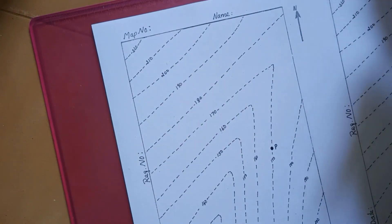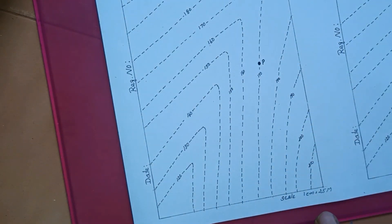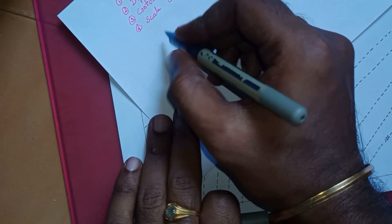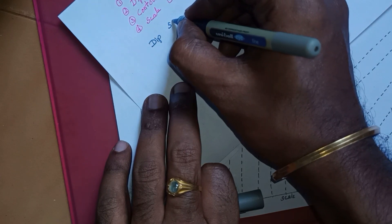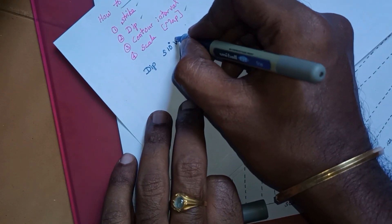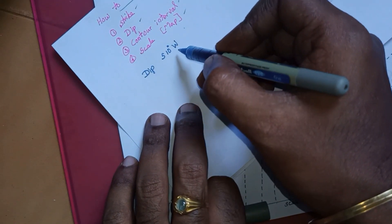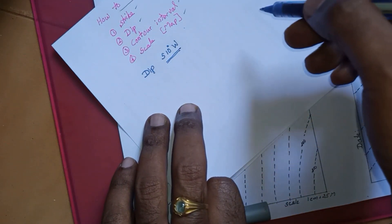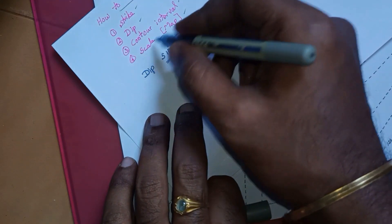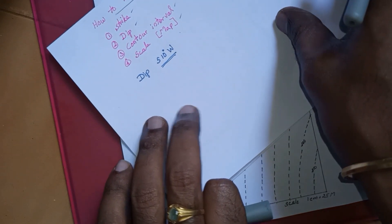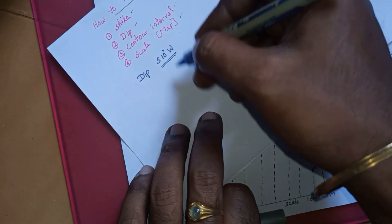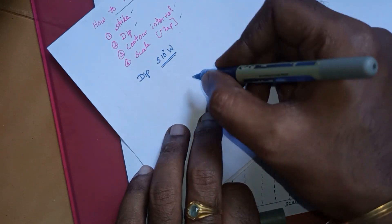The dip of the cold stream is to South 10 degrees West. At point P, the cold stream dips South 10 degrees West. We are going to find out the strike and the strike interval, then trace the contour.